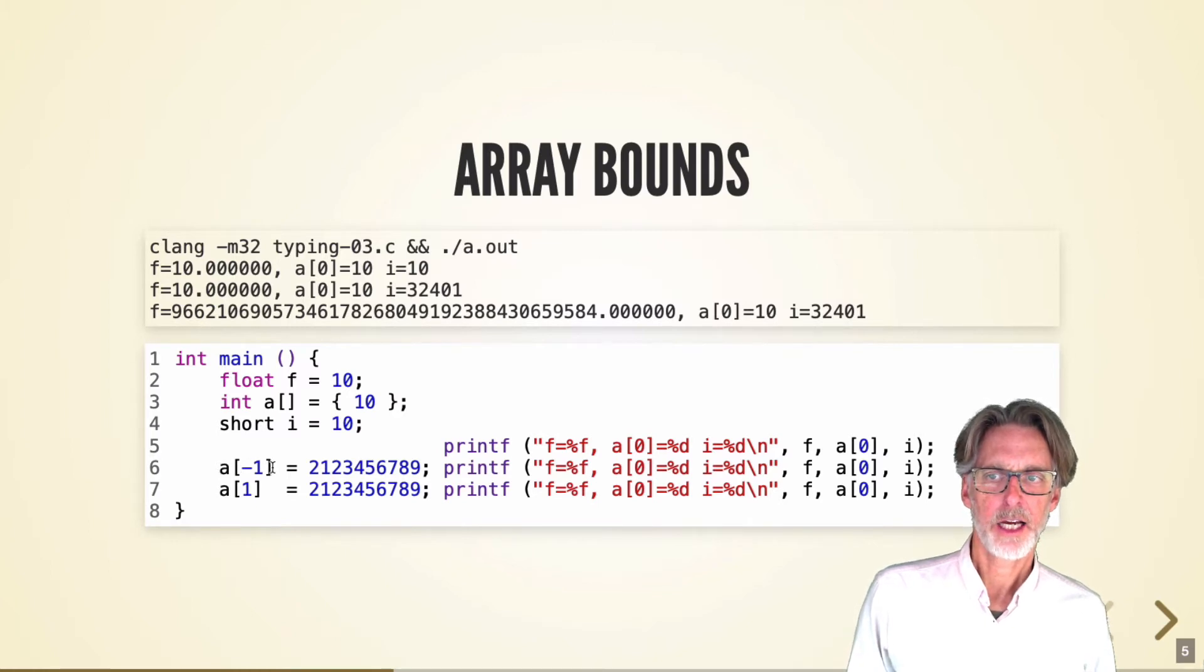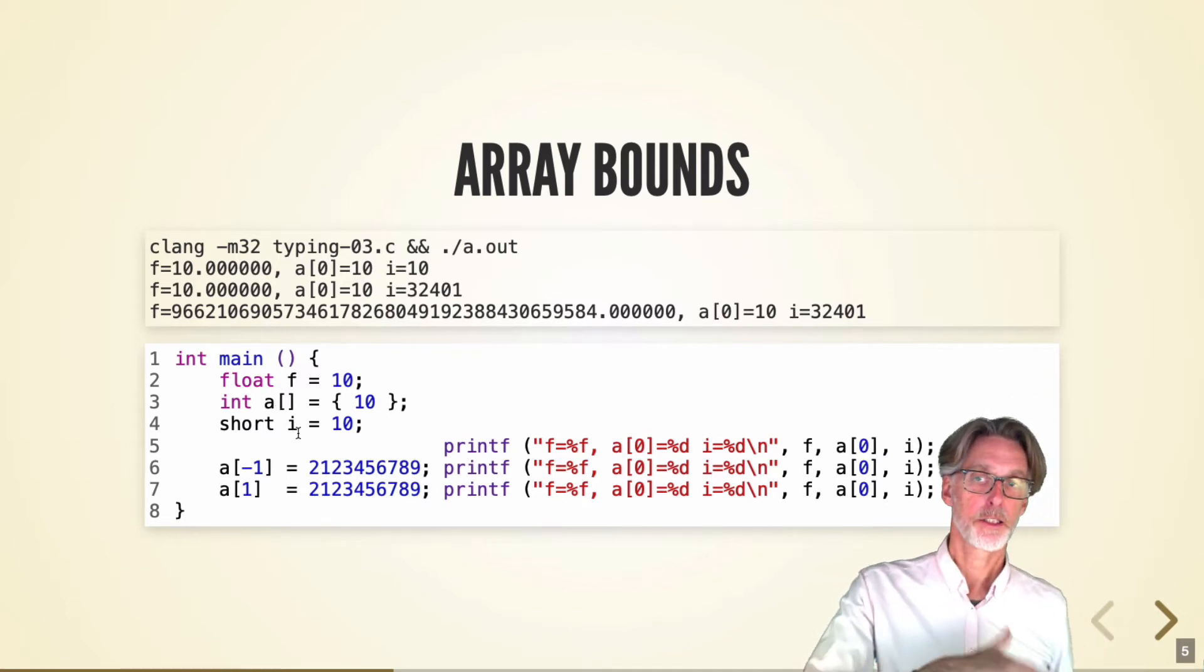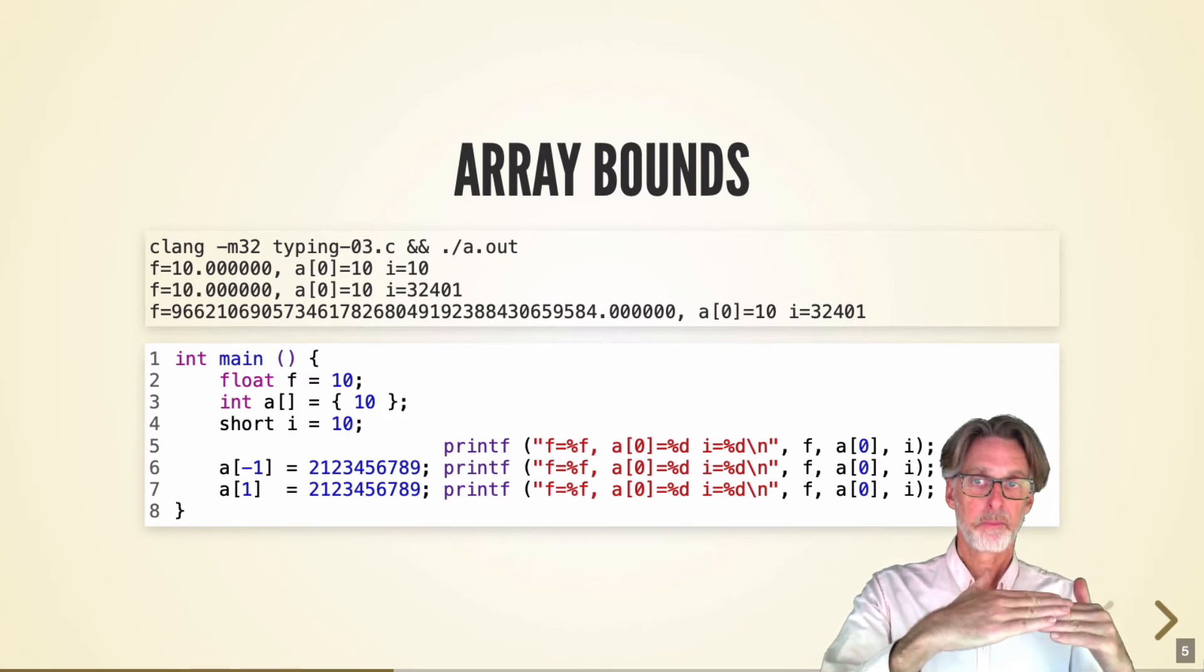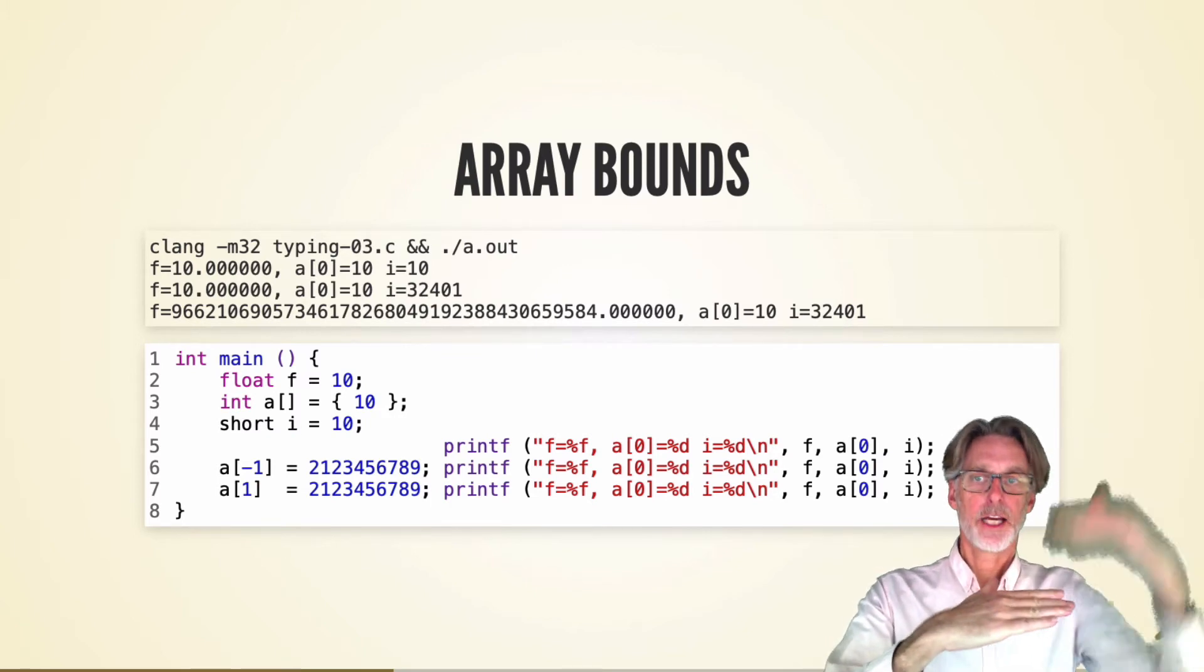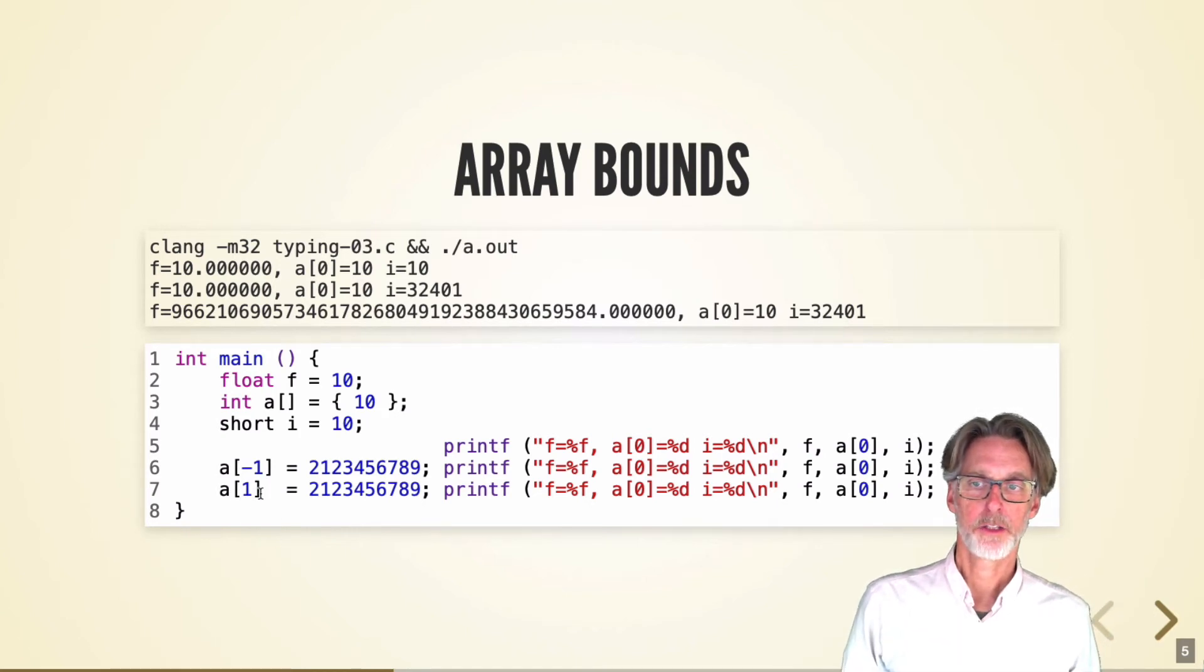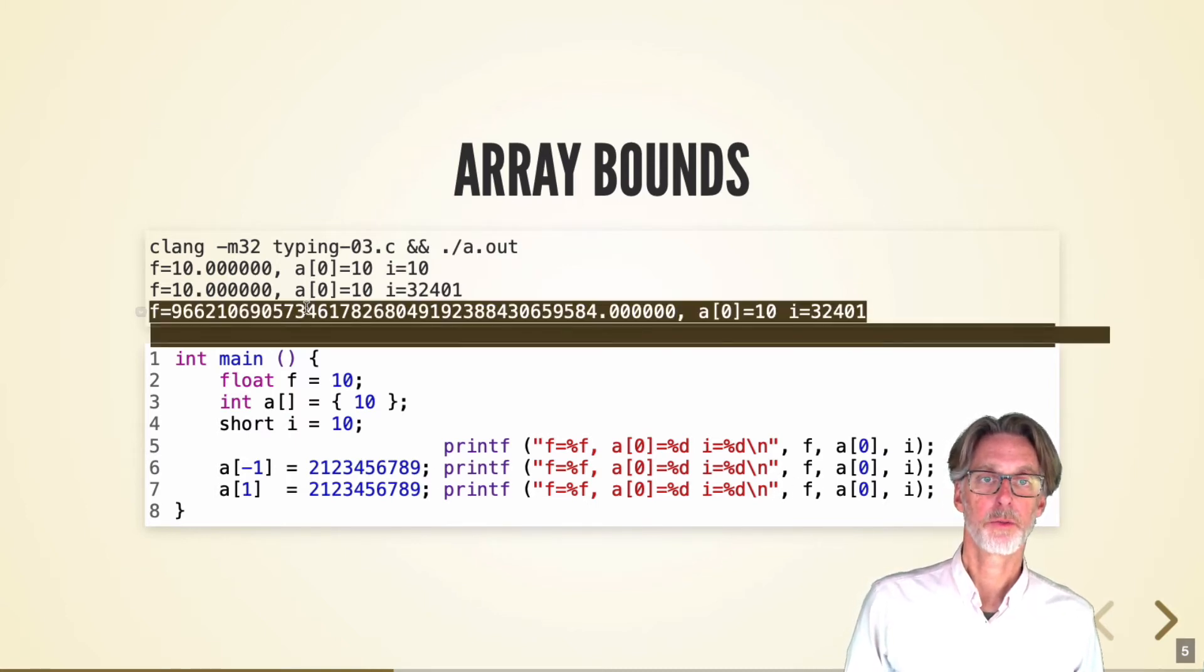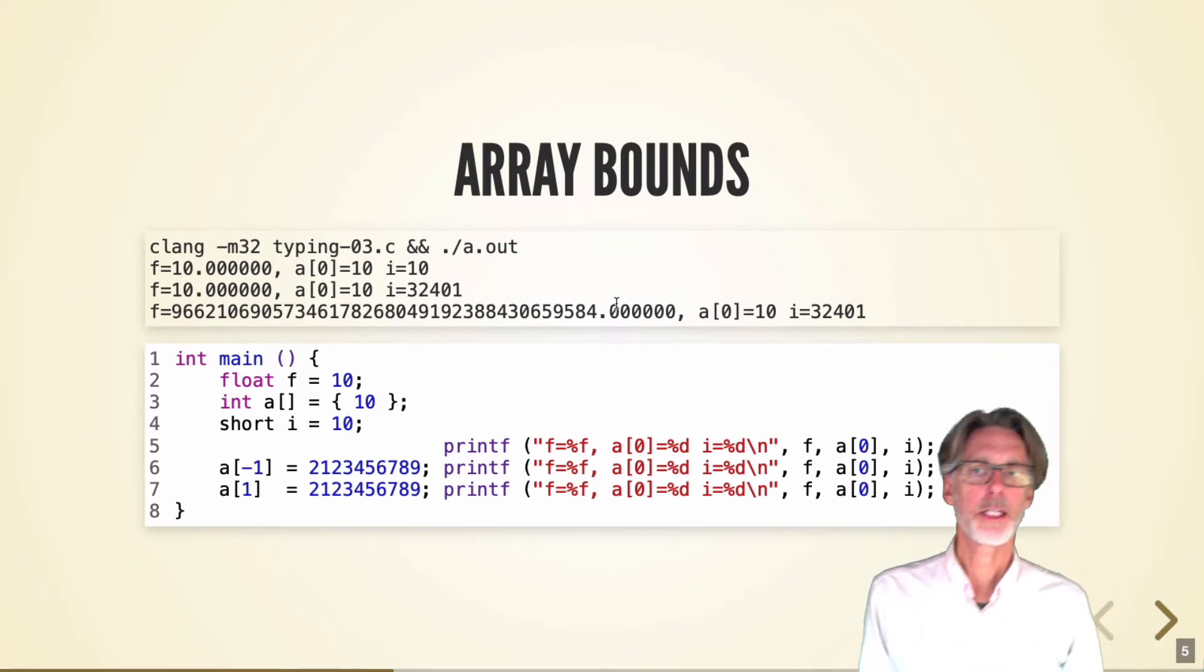After I updated A of negative 1, it ended up changing the variable I. So what that tells us is that I was stored beneath A in memory. Instead if I go above A, I get to F. And you can see that when I change A of 1, I ended up changing the variable F. So we get a different result to print it out. Note that in both cases, the result is not what I'm expecting. And we're definitely not getting the right values out. So here, I'm using the fact that C doesn't check array bounds to update memory that I shouldn't have access to.